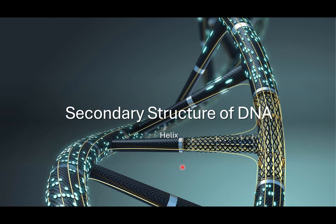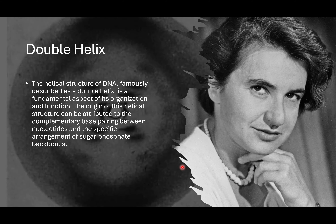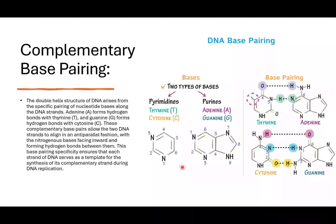With the secondary structure of DNA we're going to be looking at the helical structure. The picture on the slide is of Rosalind Franklin, the scientist who discovered the density of the DNA molecule itself and identified the helical structure. The helical structure of DNA — famously described as the double helix — is a fundamental aspect of its organization and function. The origin of its helical structure is attributed to the complementary base pairings between nucleotides and the specific arrangement of the sugar-phosphate backbones.